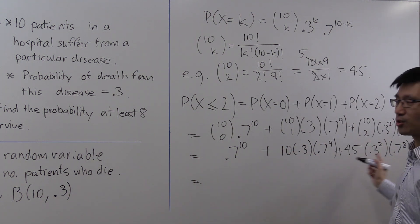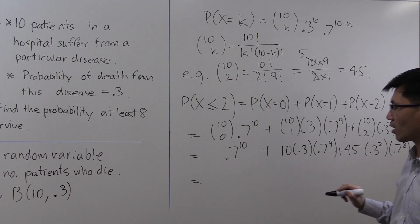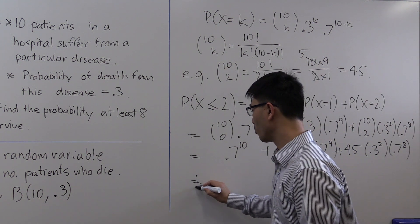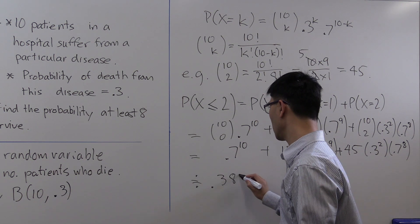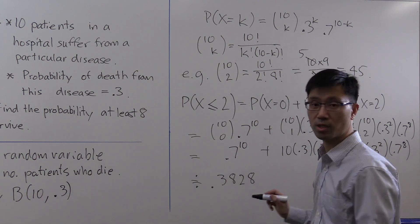You can't do this in your head, so you approximate this with your calculator. If you put it into your calculator, you'll find the answer is 0.3828 to 4 decimal places.